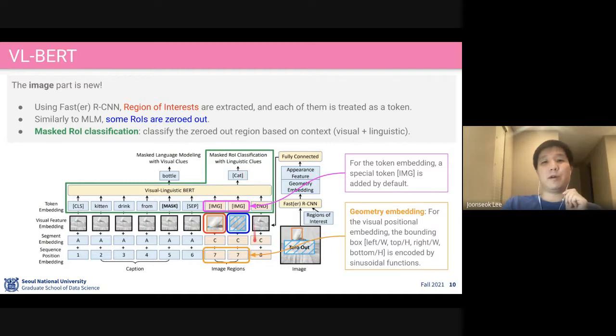We just classify this embedding and it should be the same as the actual label of this region of interest, which is cat. That will be back-propagated to learn this visual encoder. Overall, it's same as BERT, but applying the idea of BERT into the image tokens.